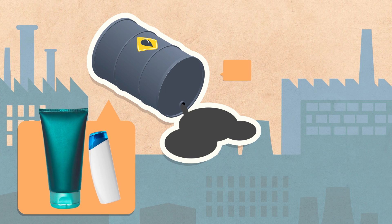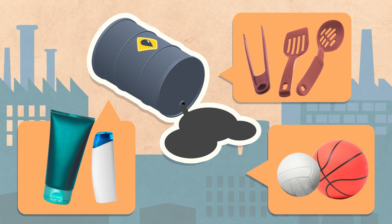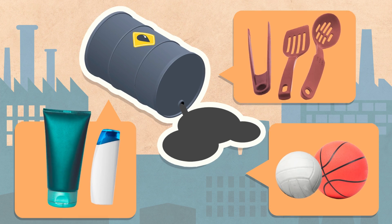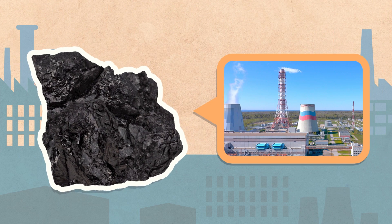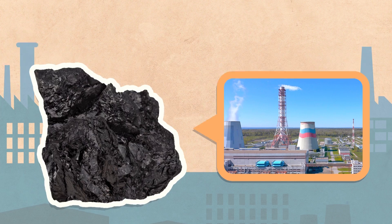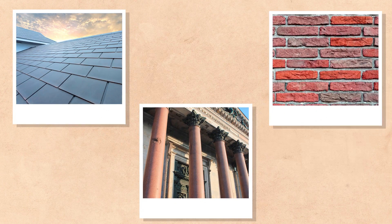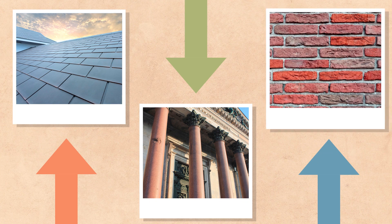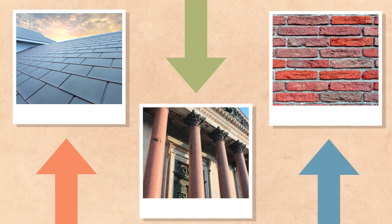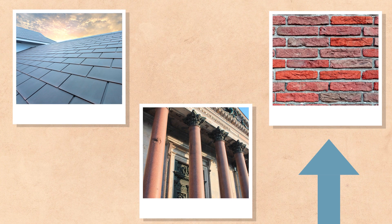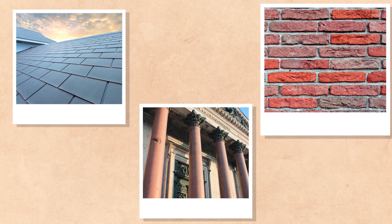Nowadays we use petroleum in different industries for making plastics, or coal to generate electric power. Still to this day, rocks like slate, granite, or clay are used in construction — this slate roof, for example, this granite column, or a clay brick.